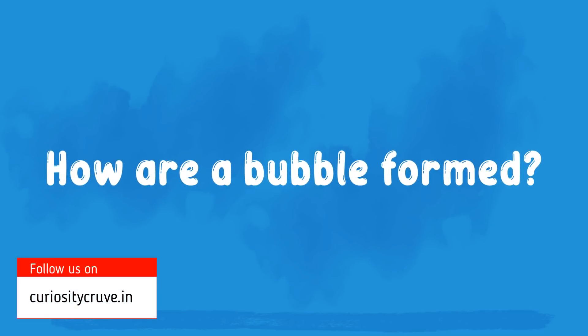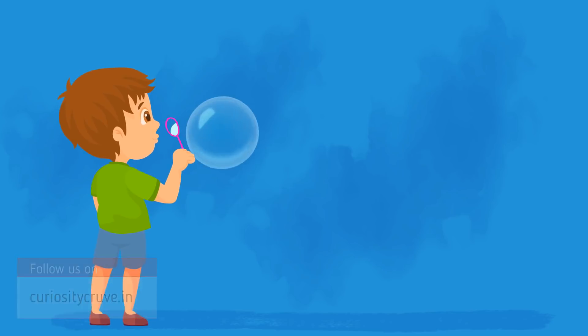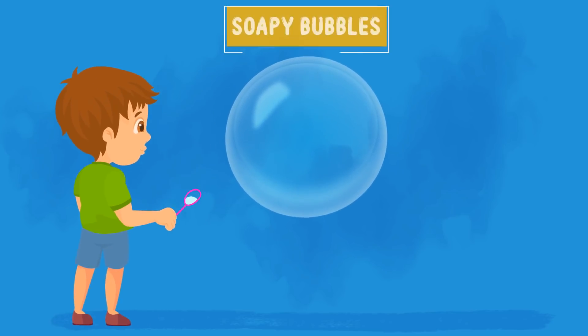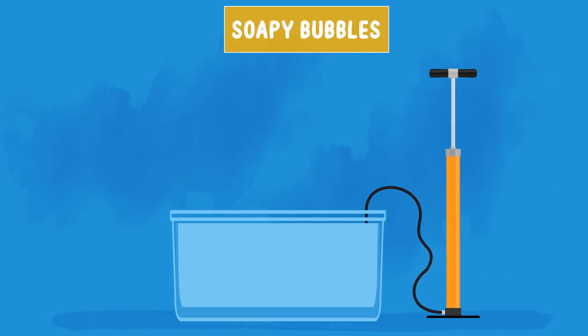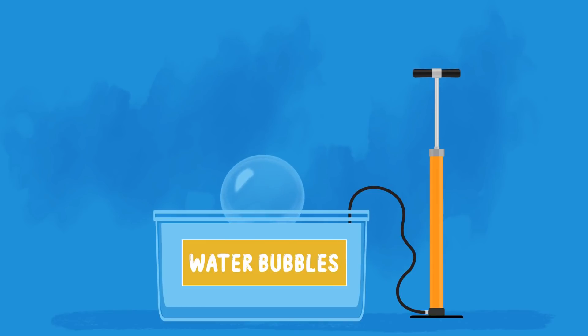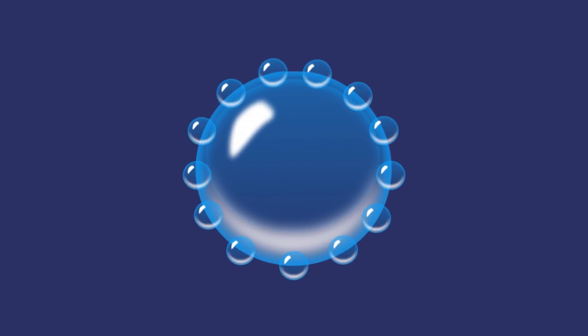How are bubbles formed? A bubble is basically a pocket of air surrounded by a thin flimsy layer of soapy water. This thin layer can be of just water too, but such bubbles don't float. Now, bubbles form because of a special property of water molecules.